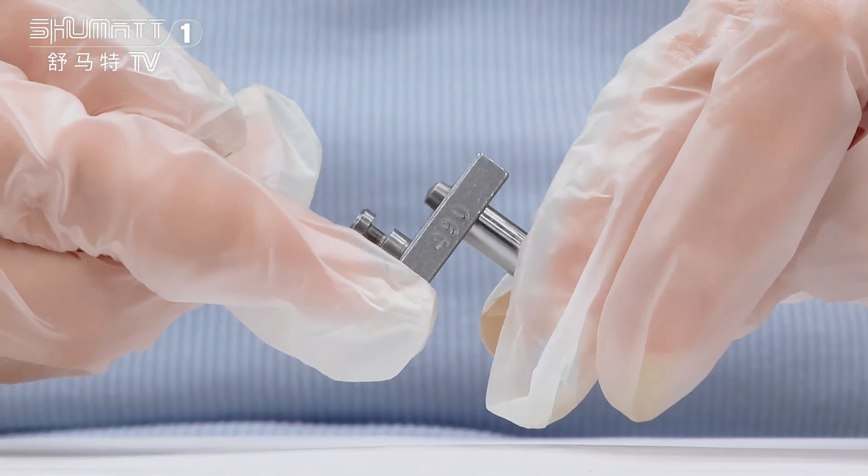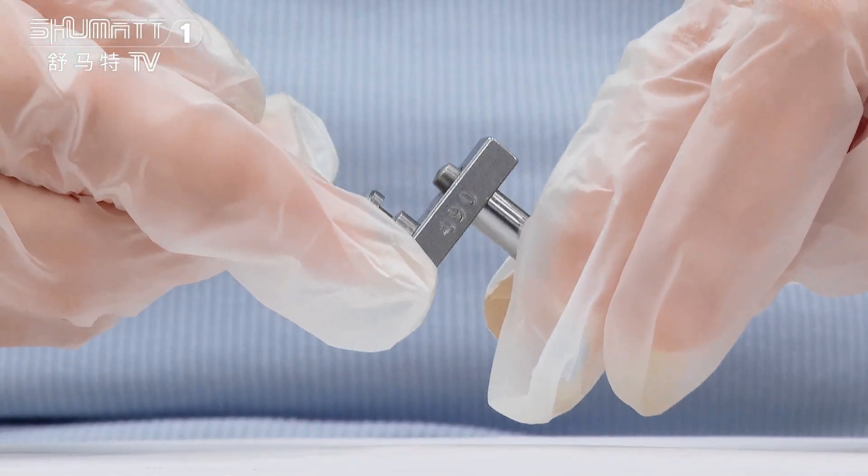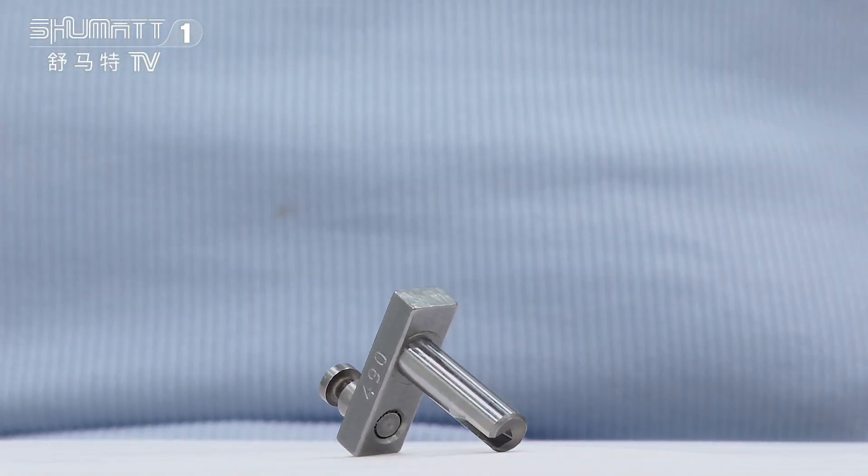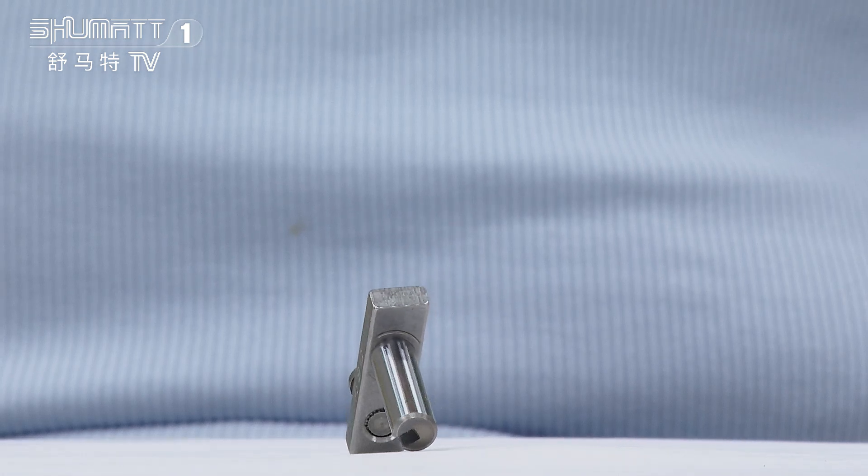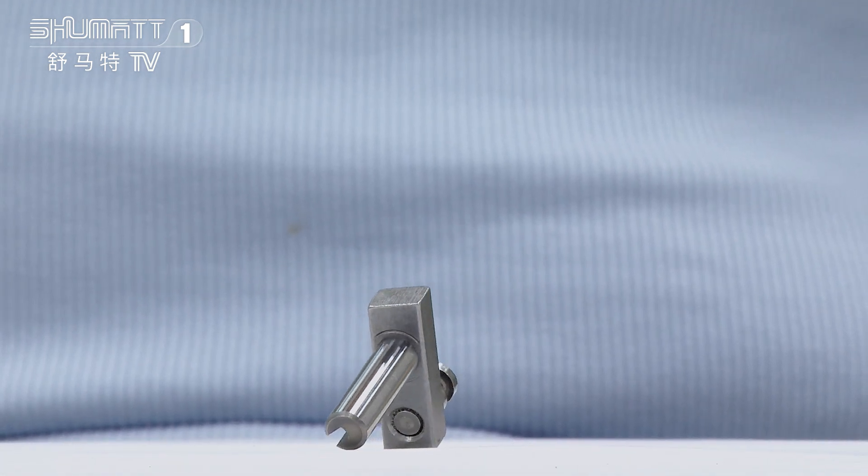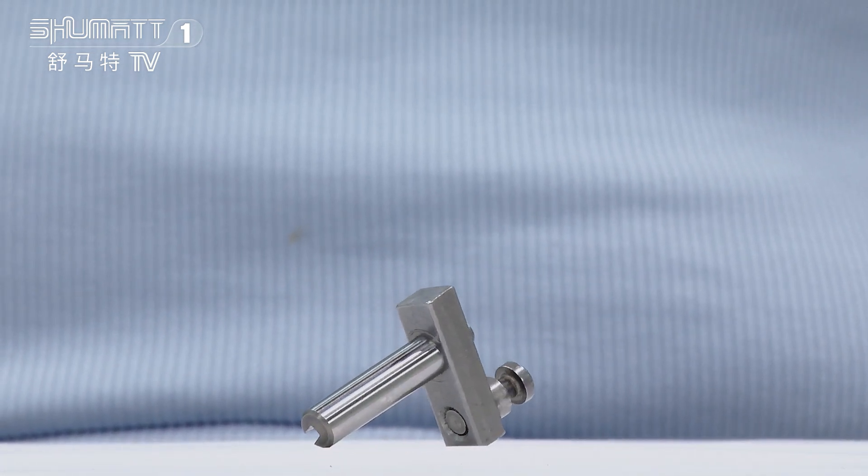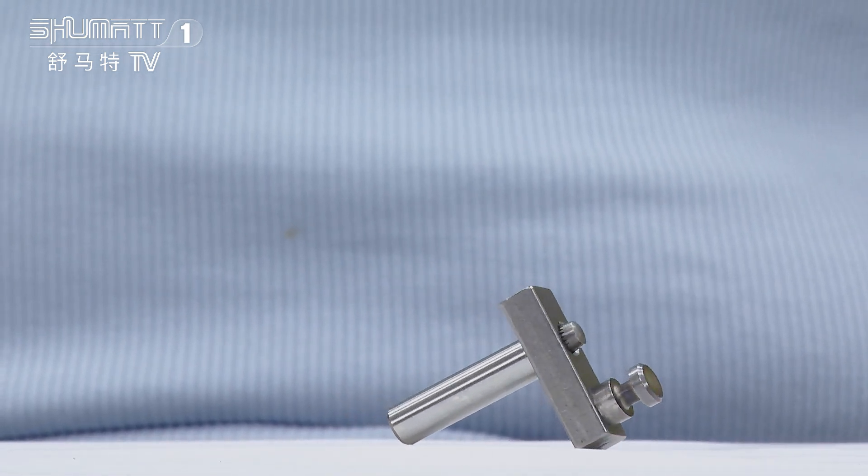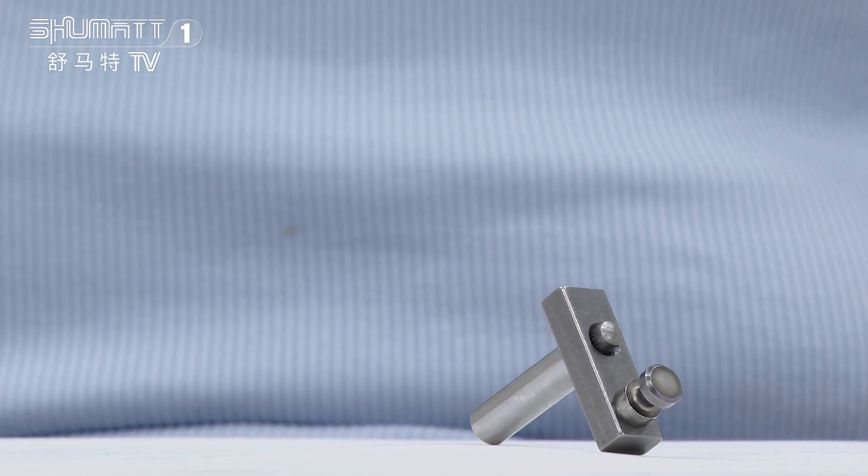Take a look at this part. You will find the engraved number here. About the product warranty time, generally we support six months quality guarantee. If you receive any unsatisfied product during six months, you can return or exchange it. Before we send the delivery, we will make strictly product testing and inspection.